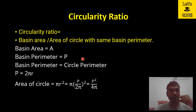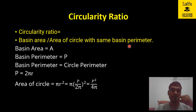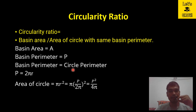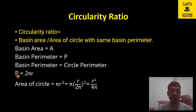For circularity ratio, we again assume a catchment or basin having area A and perimeter p. In the denominator, we need the area of a circle having the same perimeter as the basin. The basin perimeter should equal the circle perimeter. Assuming a circle of radius r, the circle perimeter is 2πr, which we set equal to basin perimeter p. The area of this circle is πr².